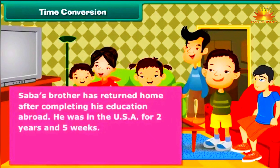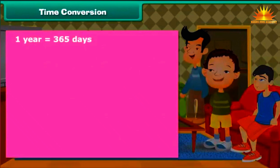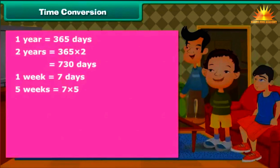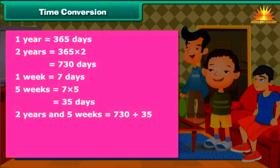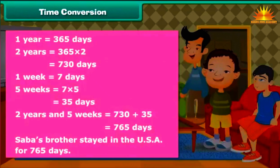Sabah's brother has returned home after completing his education abroad. He was in the USA for 2 years and 5 weeks. Express his stay in the USA in days. 1 year equals 365 days; 2 years equals 730 days. 1 week equals 7 days; 5 weeks equals 35 days. 2 years and 5 weeks equals 730 plus 35, which equals 765 days. Sabah's brother stayed in the USA for 765 days.